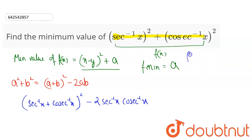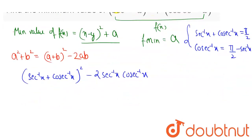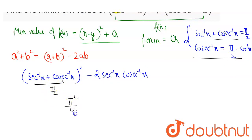Now, as you know, sec inverse x plus cosec inverse x equals pi by 2. So I can write cosec inverse x equals pi by 2 minus sec inverse x. Substituting, this becomes pi squared divided by 4 minus 2 times sec inverse x into cosec inverse x, which is pi by 2 minus sec inverse x.